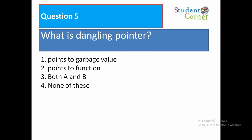What is dangling pointer? Option one: points to garbage value, option two: points to function, option three: both A and B, option four: none of these. So the answer is points to garbage value.